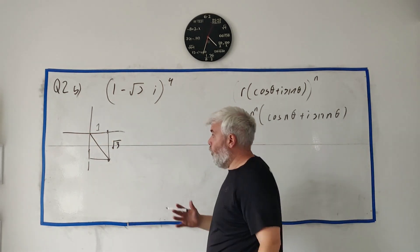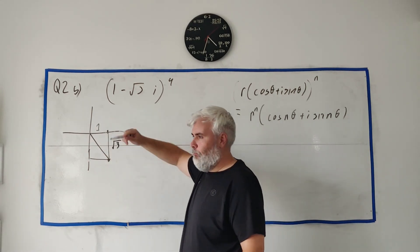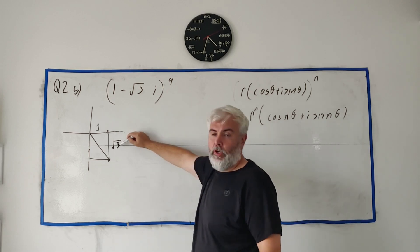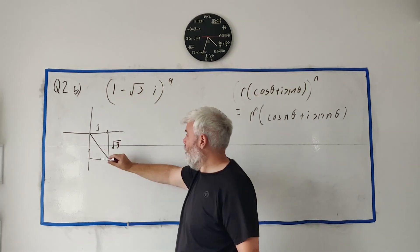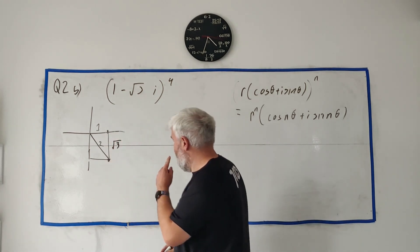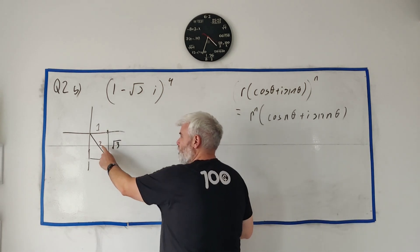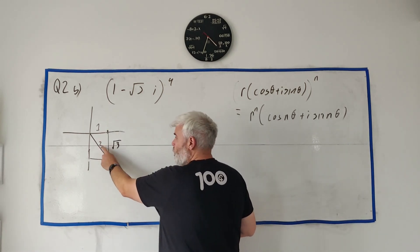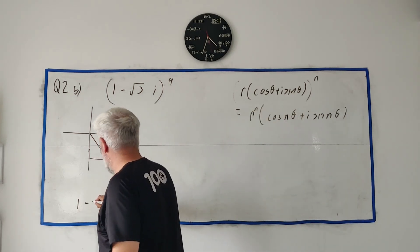So that's what it looks like down here. The height here is square root 3, because remember, it's minus square root 3 down. And the width across here is 1. And the length here, the radius, the length to the centre - well, that's Pythagorean theorem. 1 squared is 1. Square root of 3 squared is 3. Add them together, we get square root of 4. So that's 2. The length there is 2.